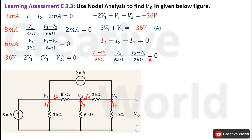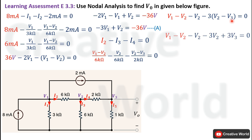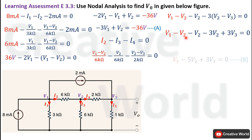Multiplying both sides by 6 kΩ to eliminate denominators: the V1 minus V2 and V2 terms simplify, and the 6 kΩ times (V2 minus V3)/2 kΩ gives 3(V2 minus V3). Opening brackets and combining V2 terms gives V1 minus 5V2 plus 3V3 equals 0. This equation cannot be further simplified, so it is labeled Equation B — the second node equation of this network.